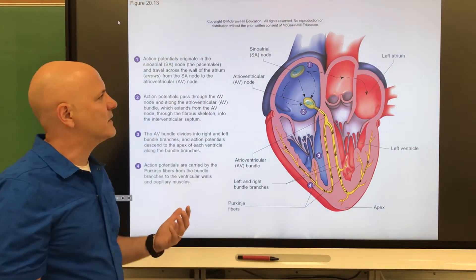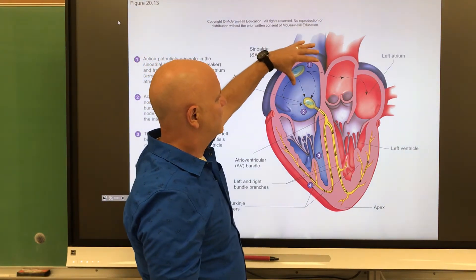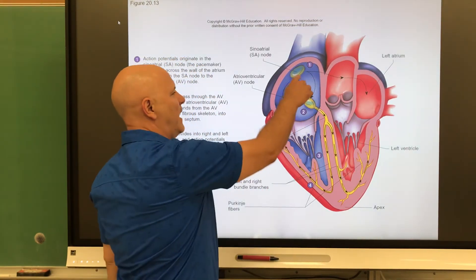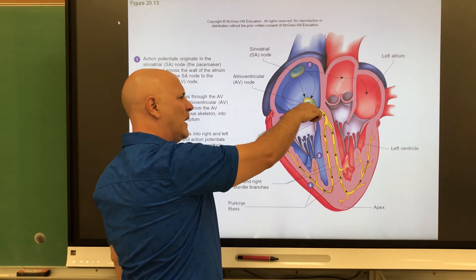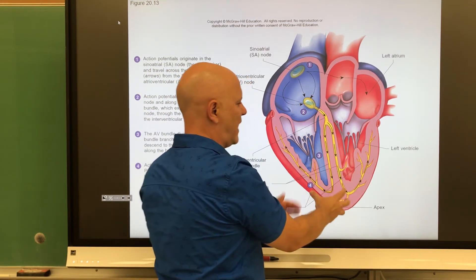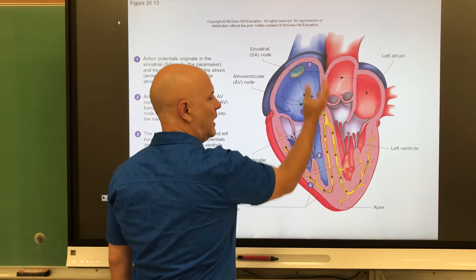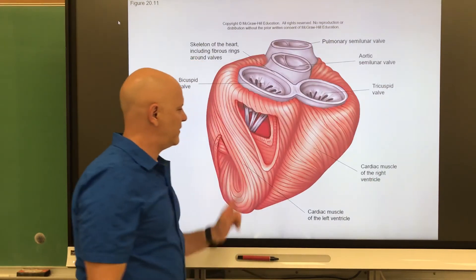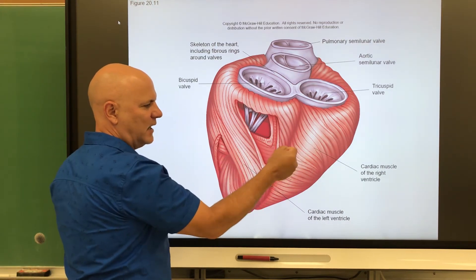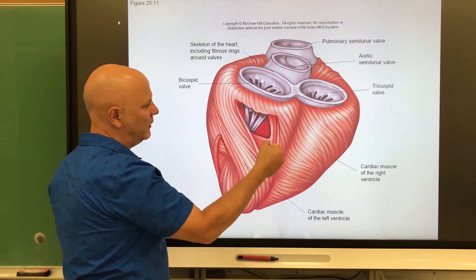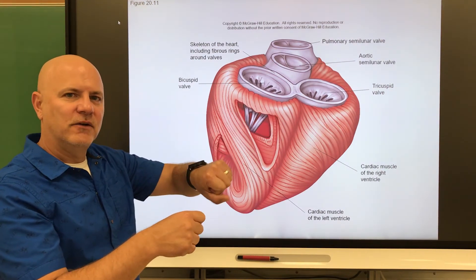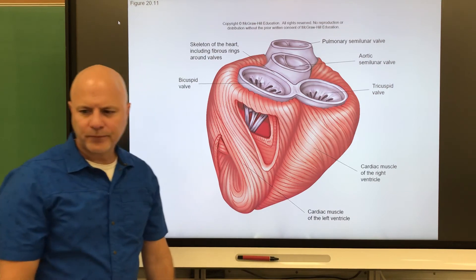To summarize the cardiac conduction system: the SA node initiates the impulse, which spreads across the atria pushing blood into the ventricles. The impulse slows through the internodal pathway and AV node, then travels along the AV bundle to the apex, where Purkinje fibers cause contraction that pushes blood upward and out of the heart. Additionally, heart muscle fibers twist around the heart, so the heart actually twists slightly when it beats — similar to wringing a rag, which helps expel more fluid.